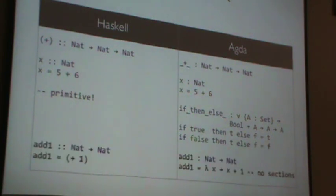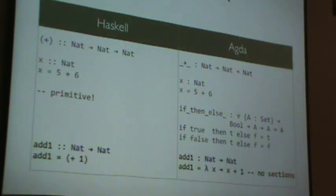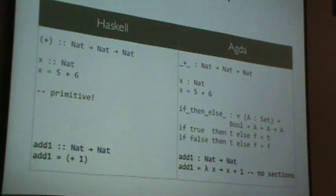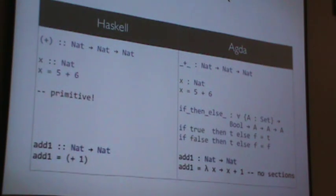One thing that you're sacrificing by using this mixfix are sections. You can't, in Haskell you can write plus one and it'll do one with, it'll do plus with one in the second argument. In Agda you typically have to write functions specifically. People have talked about adding sections, but it's already pretty complicated to parse Agda so I'm not sure about it. No one's terribly interested in doing this.